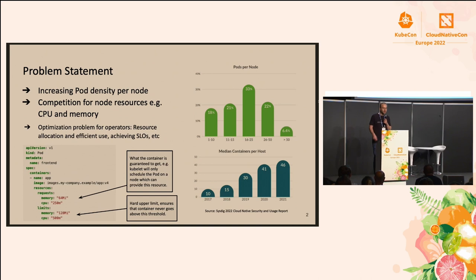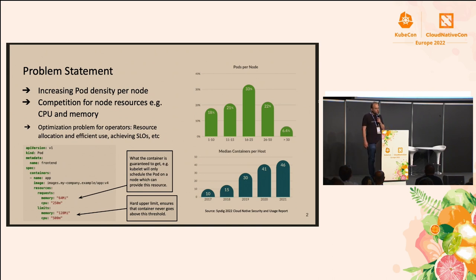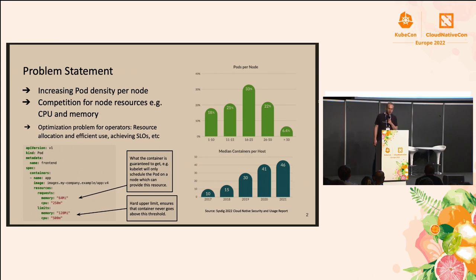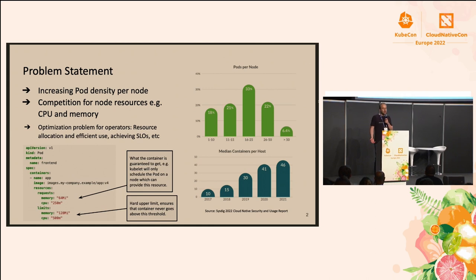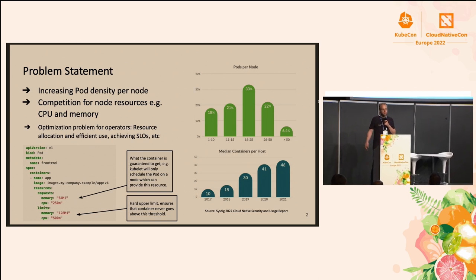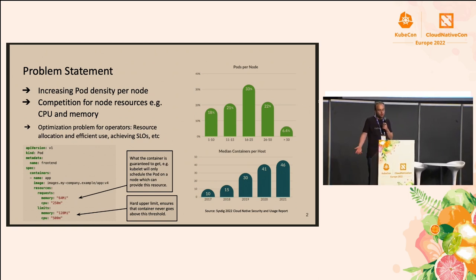With that increasing density, there's competition for resources on a given node — for example, CPU and memory. Operators need to tackle how to allocate and efficiently use resources. One tool in the pod spec is that you can define resource requests and limits. Resource requests define how much CPU and memory a given pod requires, and kubelet will make sure the pod is scheduled on a node that can satisfy that constraint. If a pod overshoots its memory usage, it will get OOM killed.